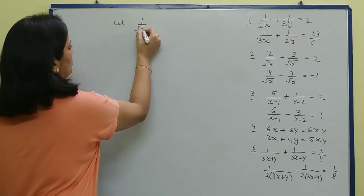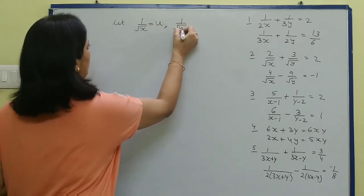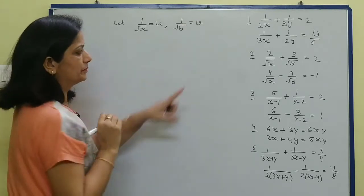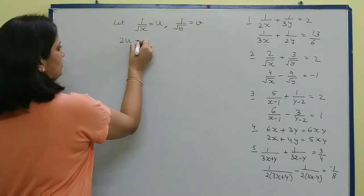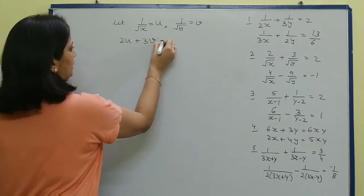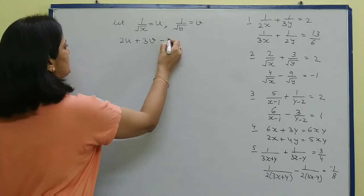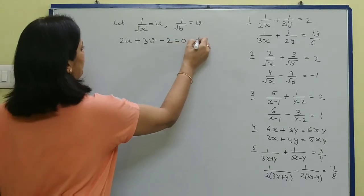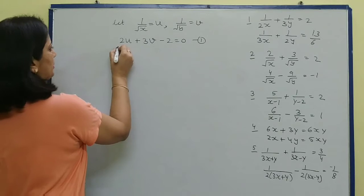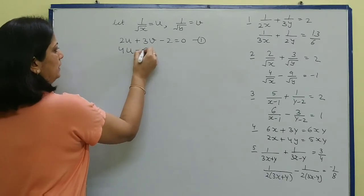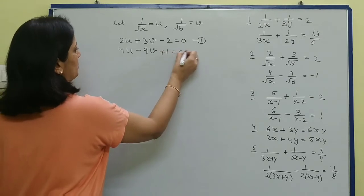In the next question, we assume: let u = 1 upon √x and v = 1 upon √y. The first equation becomes 2u + 3v - 2 = 0. Similarly the second equation becomes 4u - 9v + 1 = 0.